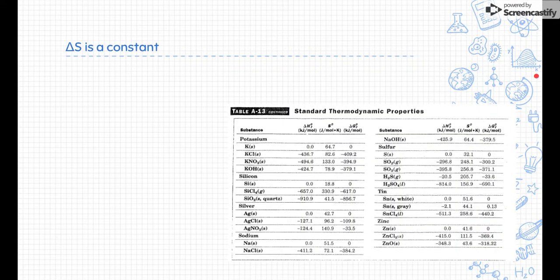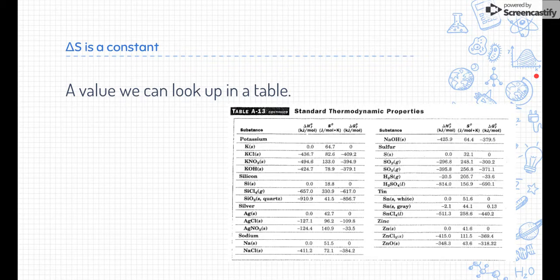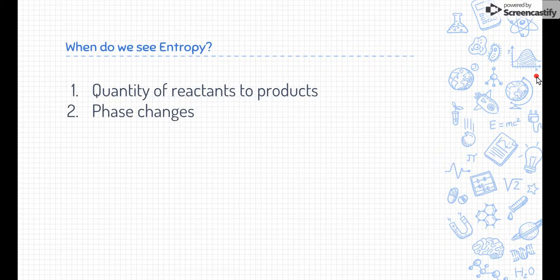Delta S or entropy is a constant, meaning we can actually look this value up on a table and every substance has a specific entropy. So when do we see entropy? How do we predict if entropy is happening?